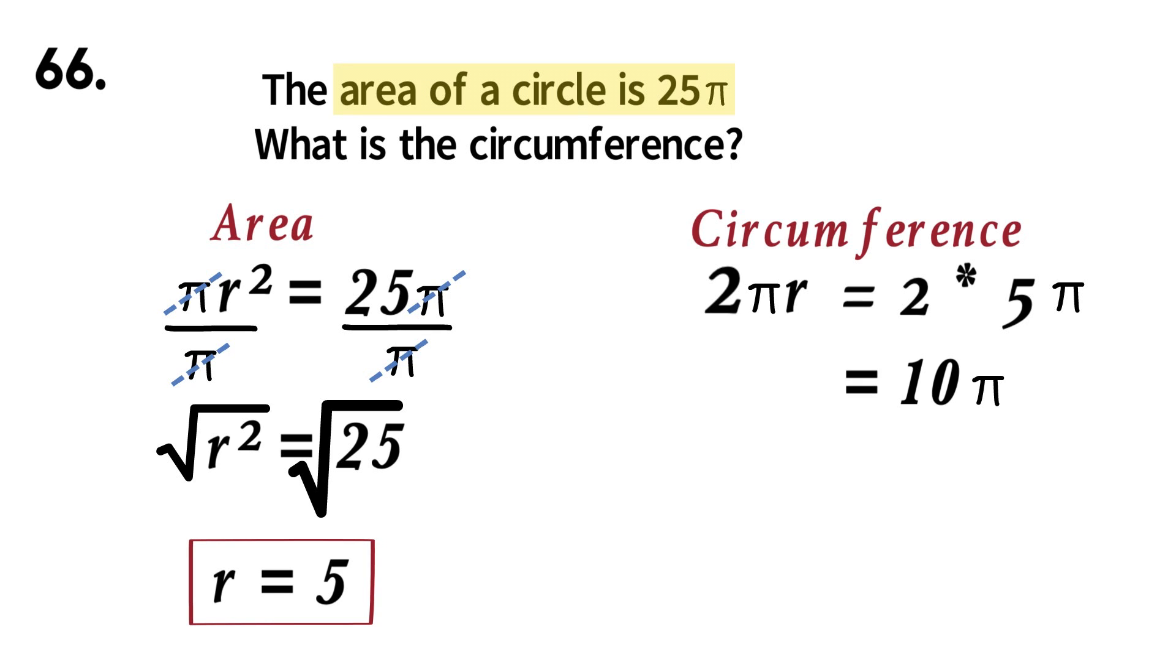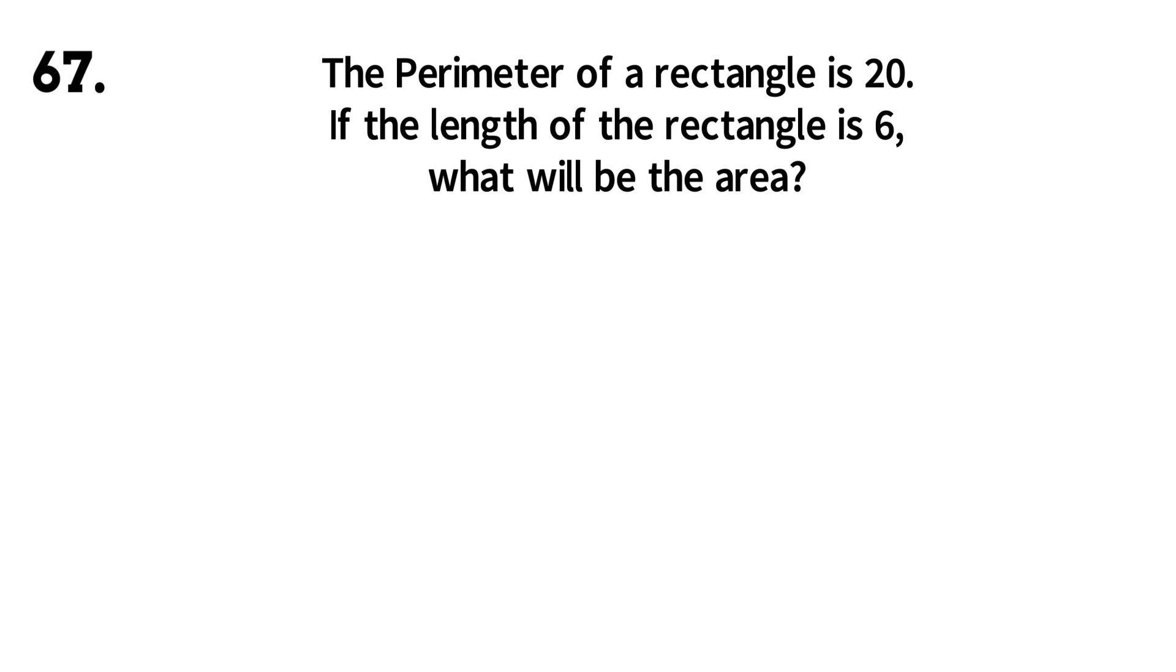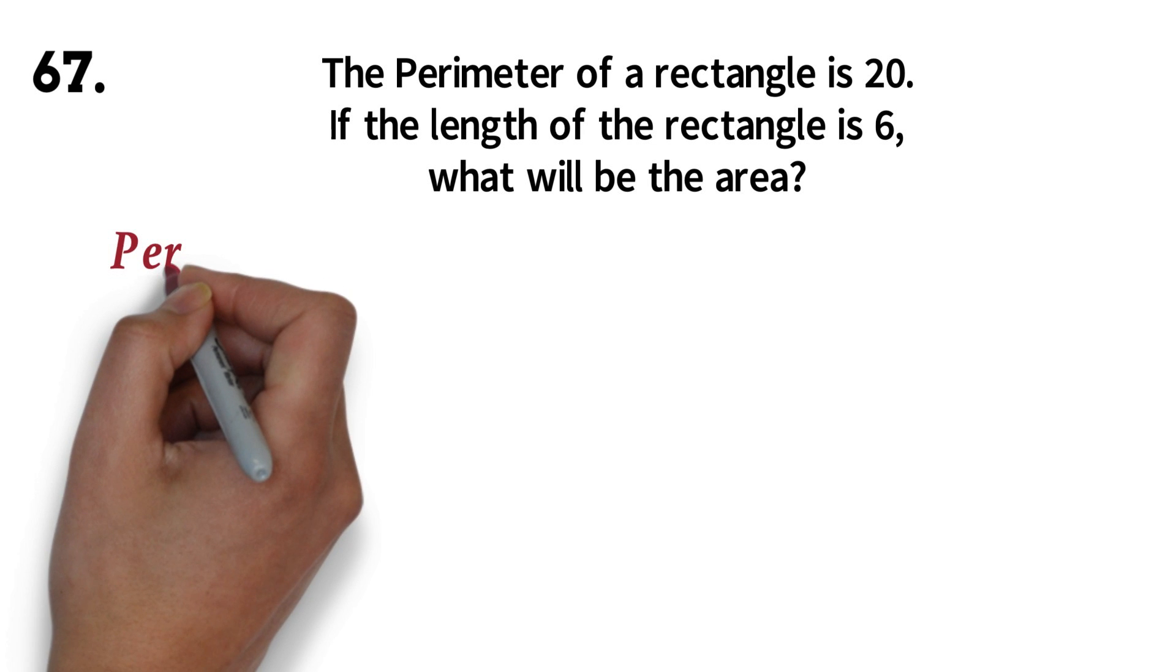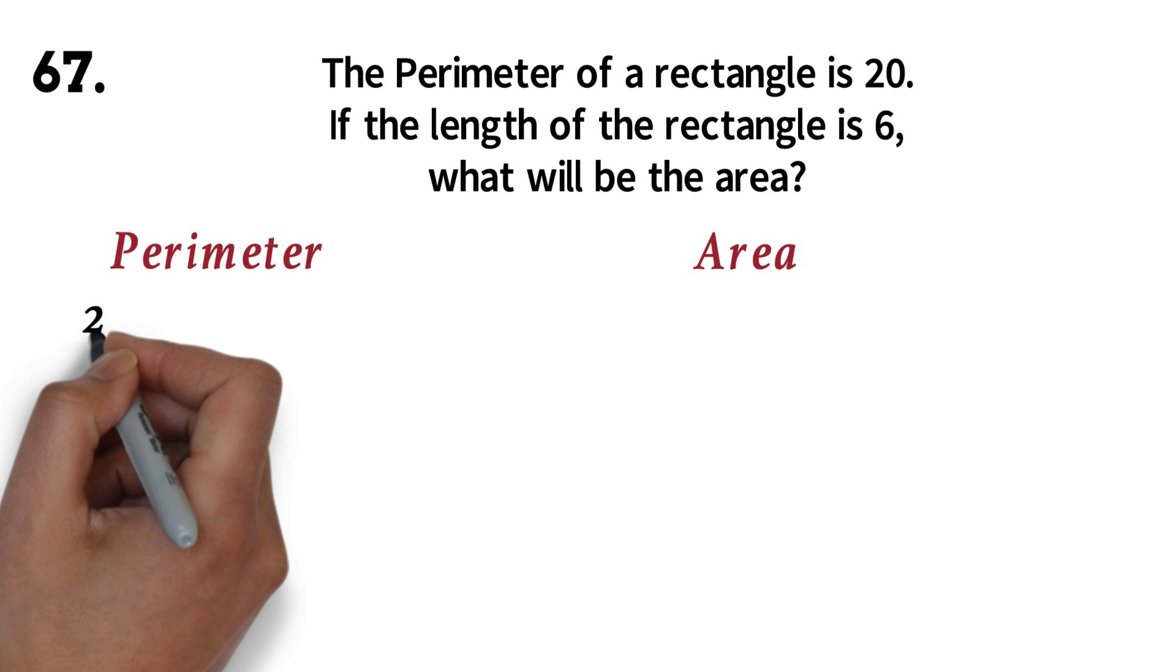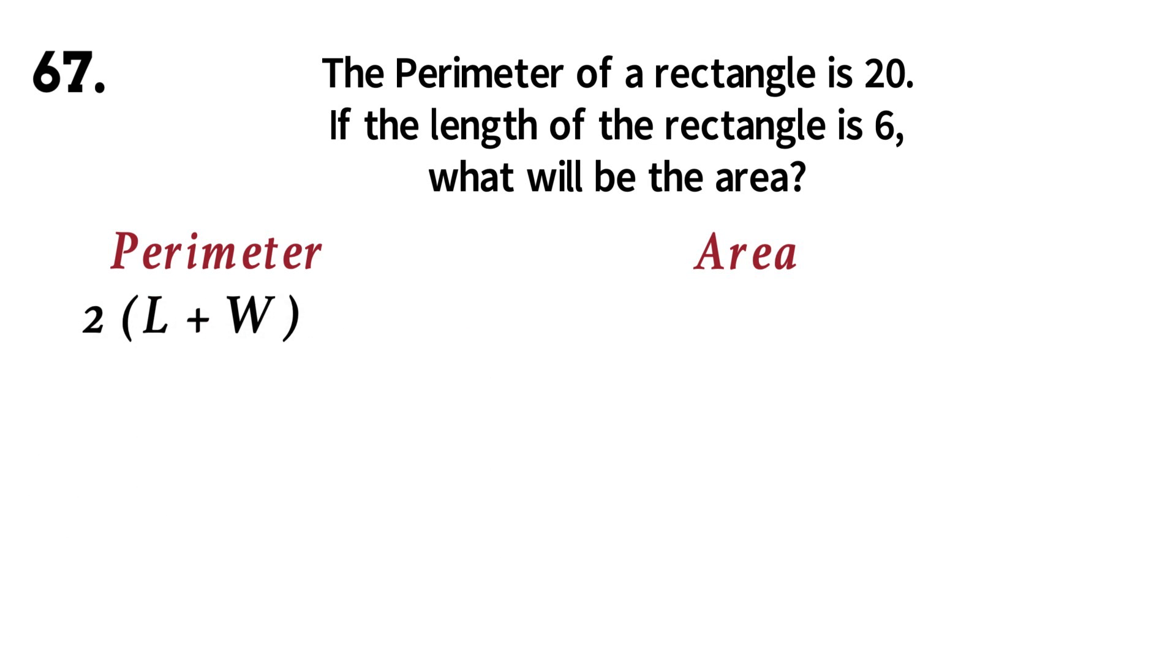Let's look at a similar question. Question 67. The perimeter of a rectangle is 20. If the length of the rectangle is 6, what will be the area? Again, the work here is being able to use both the formula for perimeter and the formula for area. The perimeter of a rectangle is 2 times length and width. We are told that the perimeter is 20. So we can equate this to 20. We have been given the length as 6. So we can put it in the formula. We can now solve for the width.